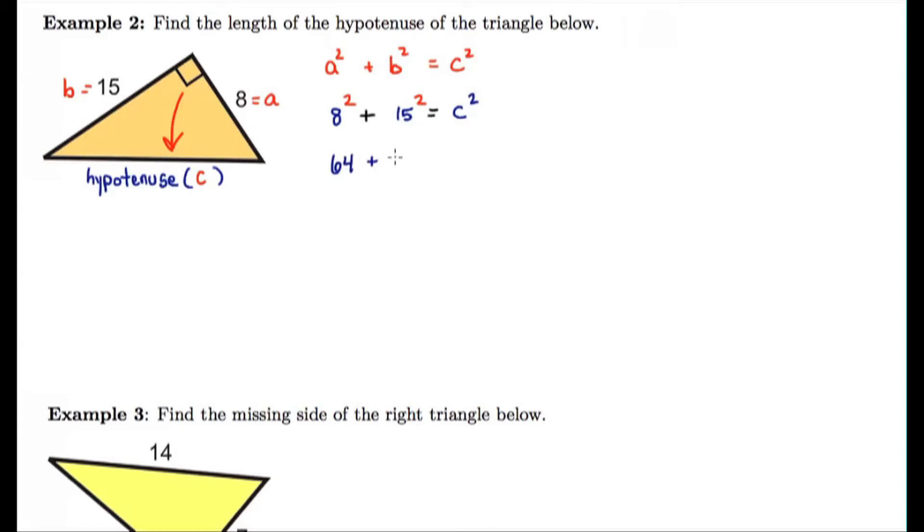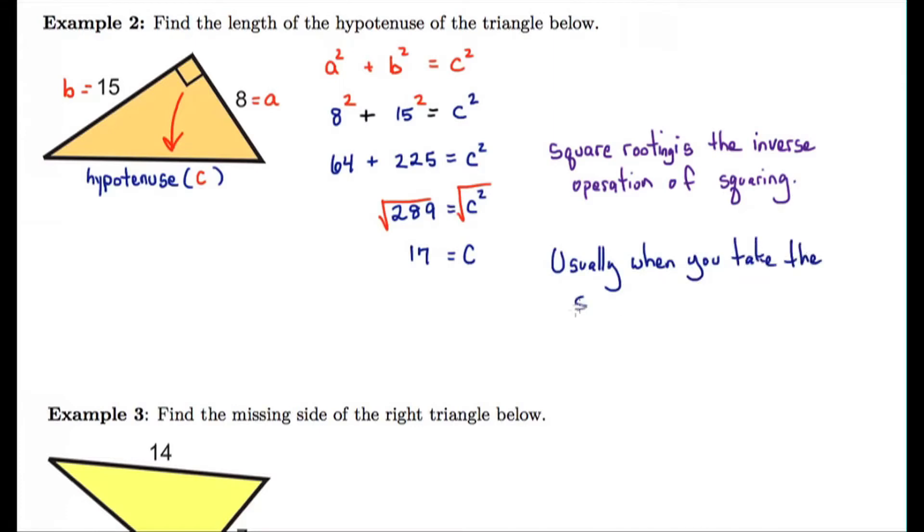Eight squared is sixty-four. Fifteen squared is 225. Combine these two numbers and I get 289 equals c squared. Now I need to take the square root to get rid of squaring, because square rooting is the inverse operation of squaring. So I want to get rid of that square. And 289 is a perfect square. I get c equals seventeen.